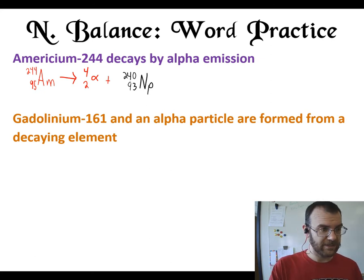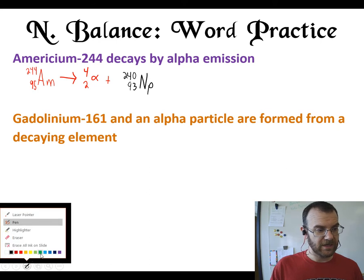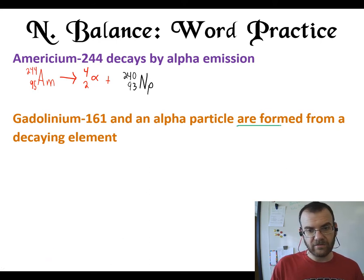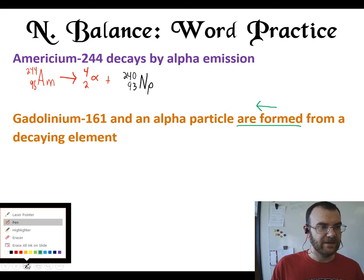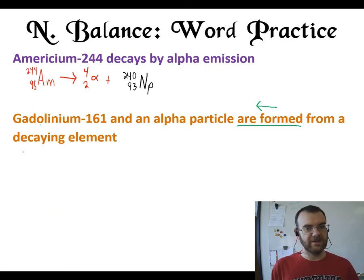So here's my next problem that I'm going to take care of. Gadolinium 161 and an alpha particle are formed from a decaying element. Now there is a trick to this one because it says are formed. This is implying that the question is kind of backwards because the stuff that we're going to get is the gadolinium and the alpha particle. Now this means that our gadolinium and our alpha particle are what is made so that is going to be after our arrow.